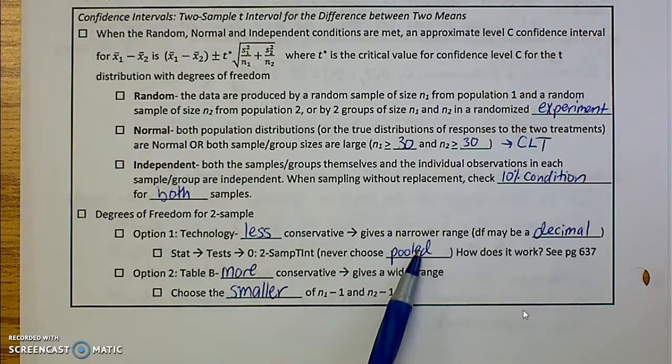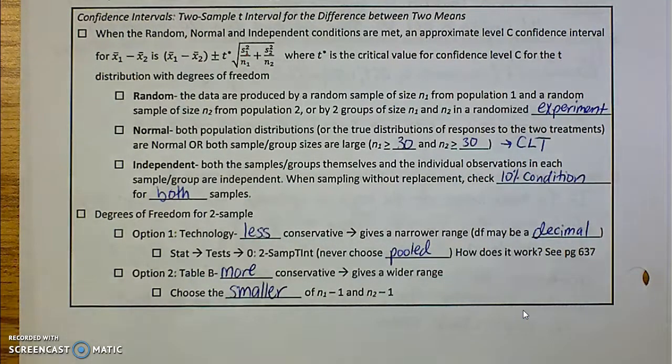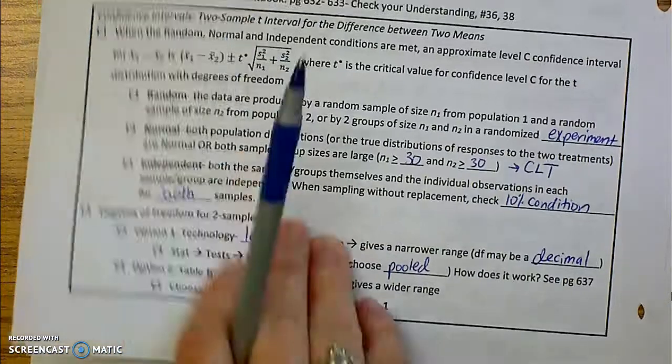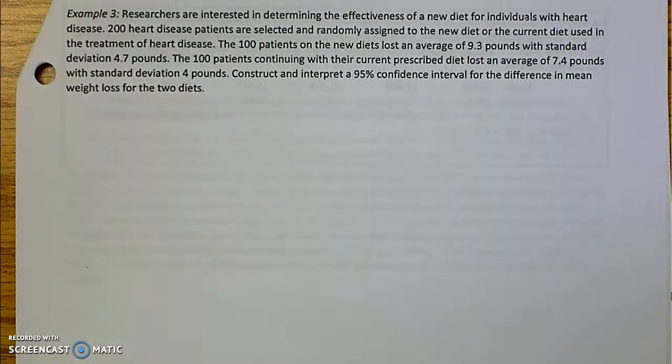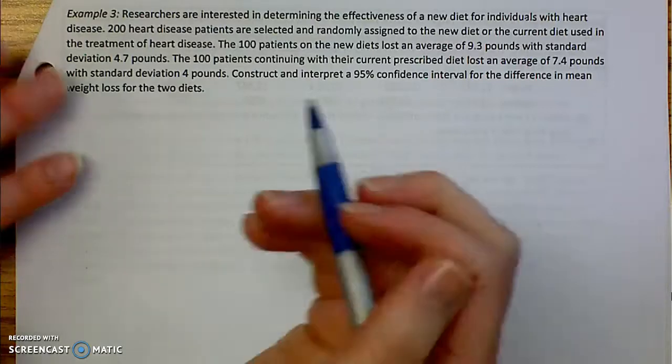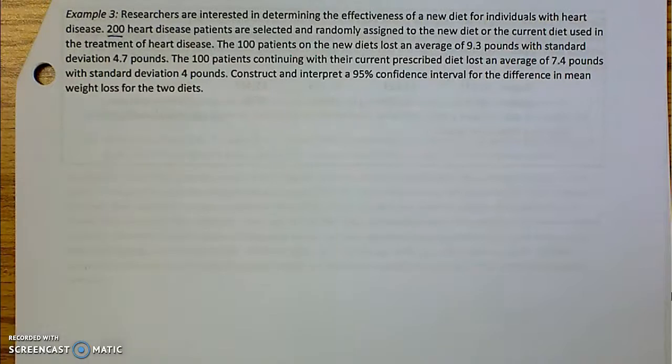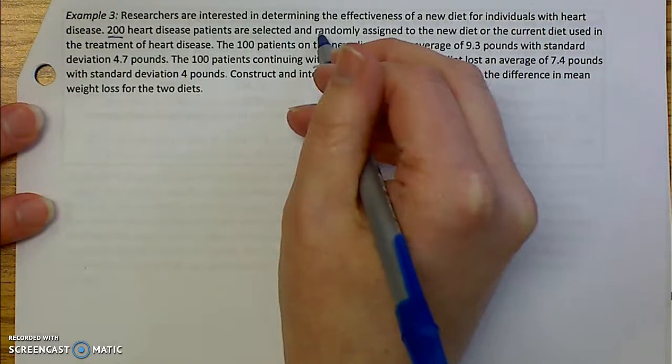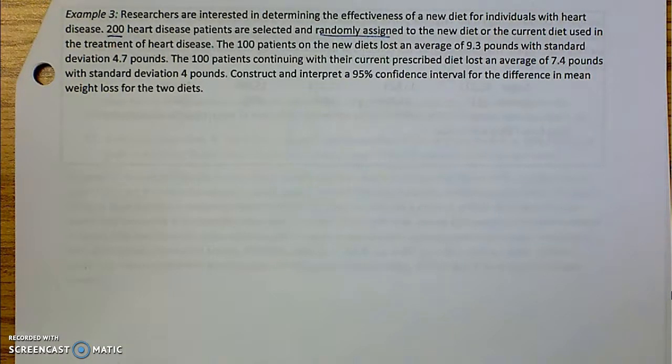Never choose pooled. From the calculator, it may give you a decimal, but that's okay. So let's go through our first example together. Researchers are interested in determining the effectiveness of a new diet for individuals with heart disease. 200 heart disease patients are selected and randomly assigned to the new diet or the current diet used in the treatment of heart disease. So that tells me this is going to be an experiment.